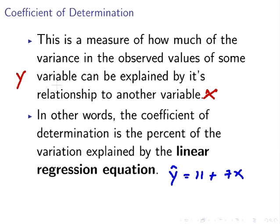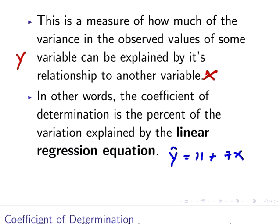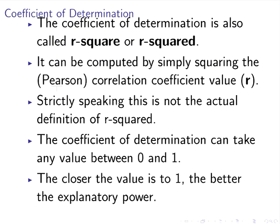The coefficient of determination is also called r-square or r-squared, and it's simply computed by squaring the correlation coefficient r. To avoid any doubt, when I mean the correlation coefficient I mean the Pearson correlation coefficient. In some courses you will be dealing with other types of correlation coefficients.